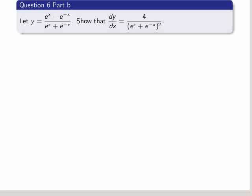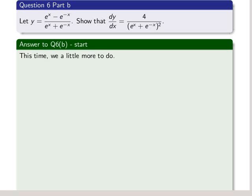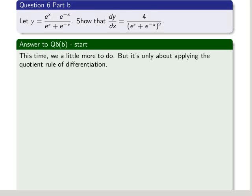We take part b, and we see it's made up of exponents with a numerator and a denominator. This time we're given its differentiation with respect to x, but we have to show that it is so. We have a little more work to do, but it's only about applying the quotient rule of differentiation.